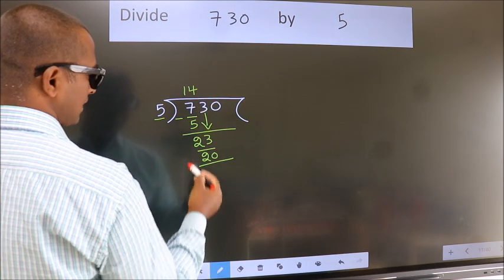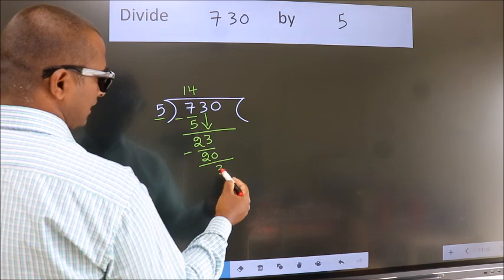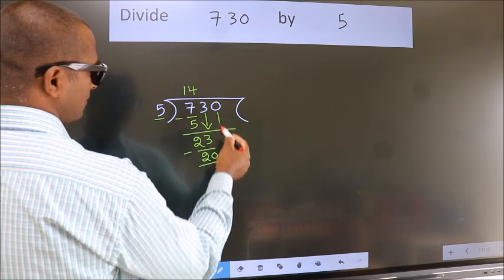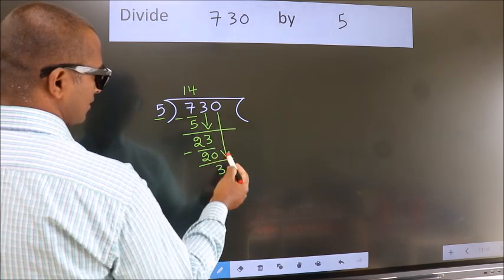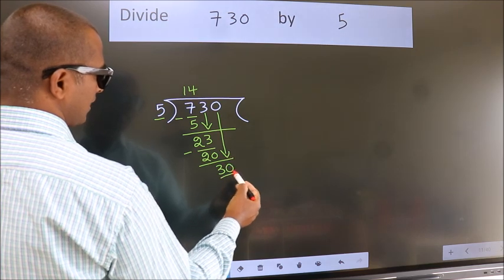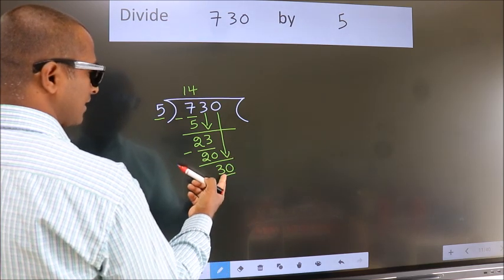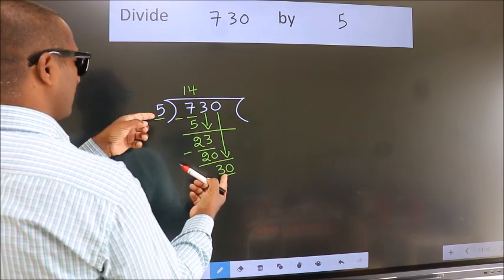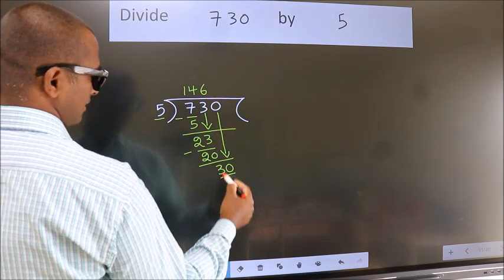Now, we subtract. We get 3. After this, bring down the beside number. So, 0 down. So, 30. When do we get 30 in the 5 table? 5, 6, 30.